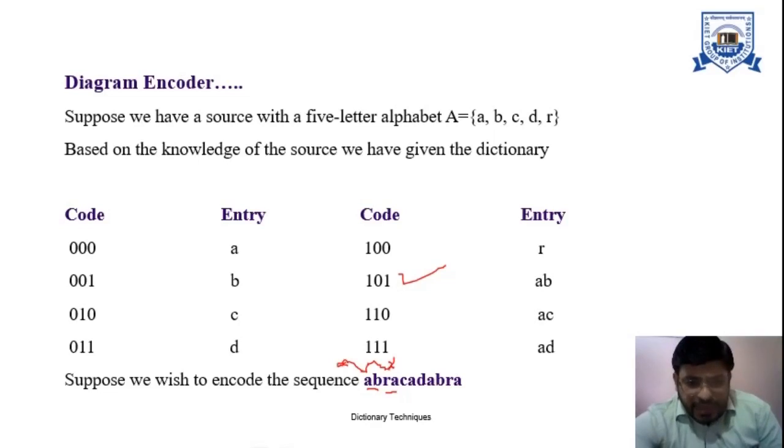a will become the first character for the next diagram and the next two characters will be ac. Again we find the entry for ac and replace that code with that particular entry. This process will continue till we find the codeword for that.